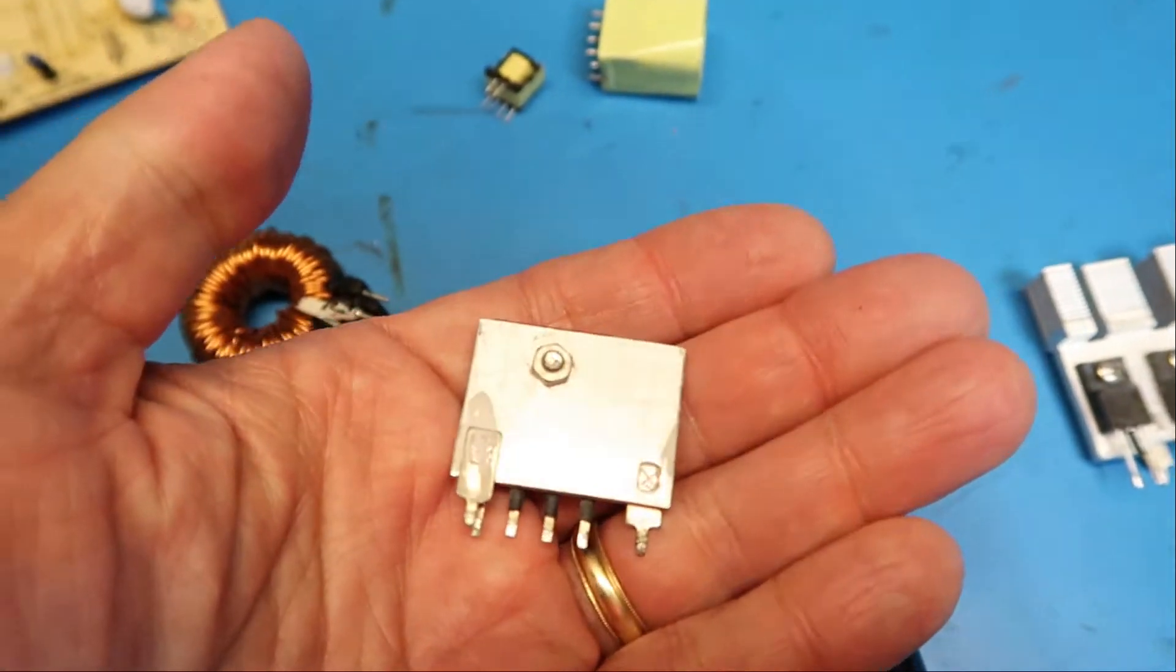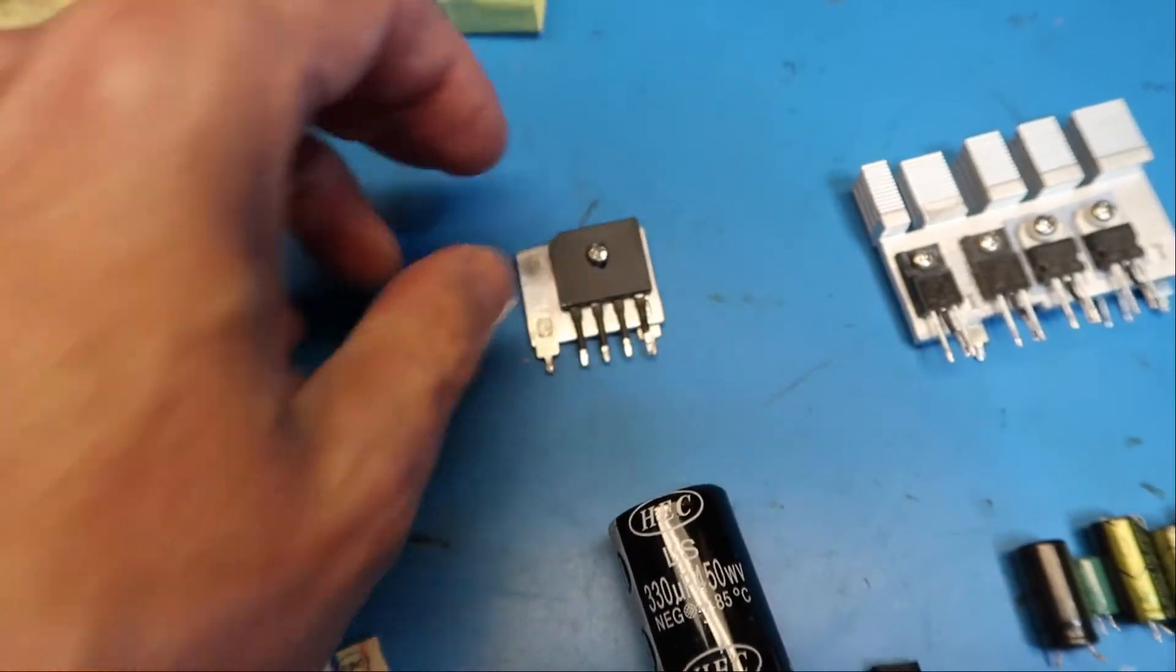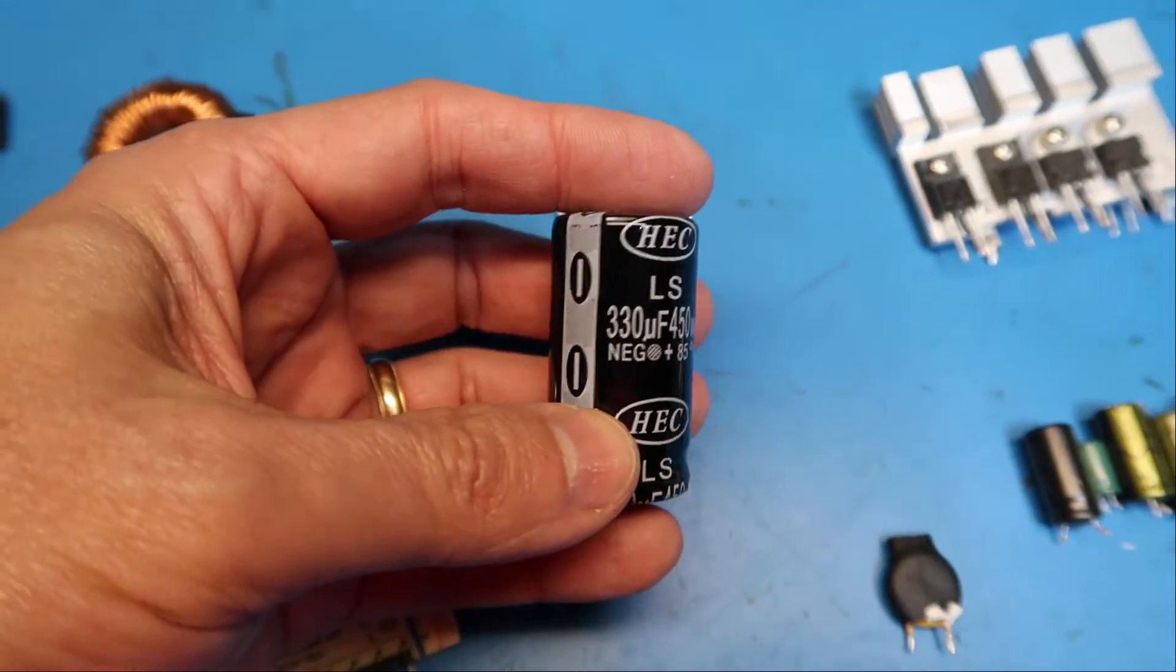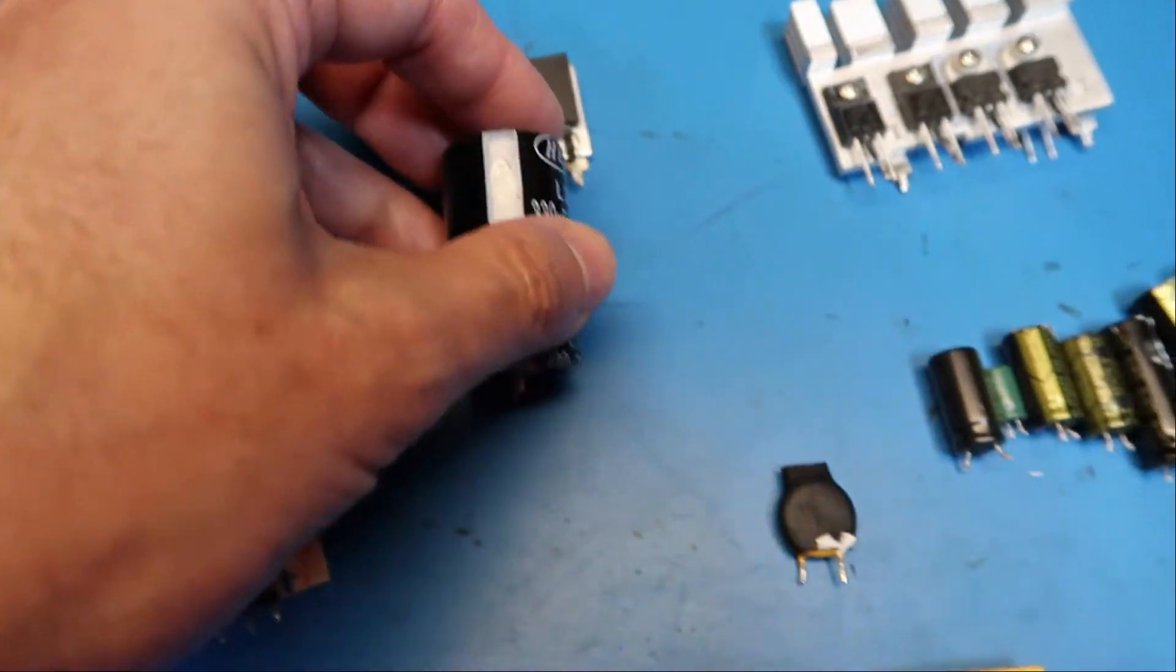This is the bridge rectifier. Definitely a keeper. Here's our big high voltage capacitor. Keeper also.